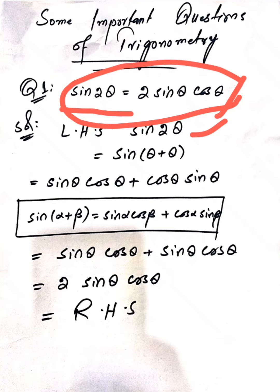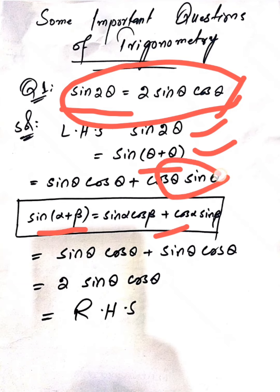The formula is sin(α + β) = sin α cos β + cos α sin β. When we apply that formula to sin(θ + θ), we get sin θ cos θ + cos θ sin θ. Rearranging, both terms are the same: sin θ cos θ + sin θ cos θ = 2 sin θ cos θ, which is our right hand side result.